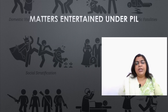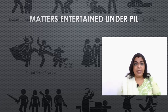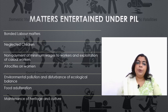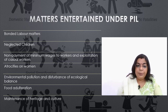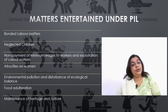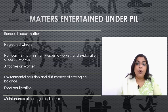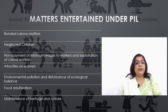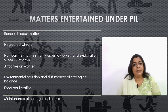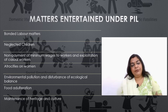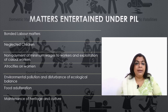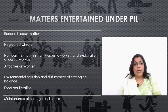What are the matters which can be entertained under PIL? These matters are also related to the focus areas. If there is a problem related to bonded labor matters, neglected children, non-payment of minimum wages of workers and exploitation of casual workers, atrocity on women or a child, environmental pollution and disturbance of ecological balance, food adulteration, or maintenance of heritage and culture — all these matters are related to the public interest and are the confined matters for which you can file a PIL.